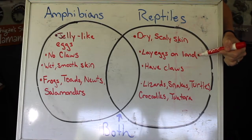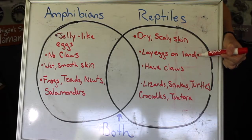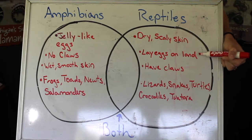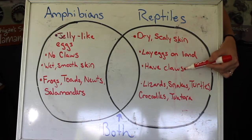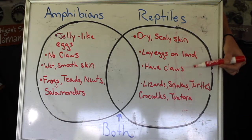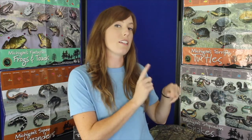Reptiles also lay their eggs on land, not in water. Unlike amphibians, reptiles have a solid leather-like shell that protects the baby reptile inside. While their shell isn't as hard as a chicken egg, this adaptation also allows reptiles to occupy more land habitats or areas away from water. Reptiles that have legs also always have claws — another big difference between them and amphibians. However, not all reptiles have legs, but they do possess the other main physical characteristics.